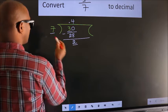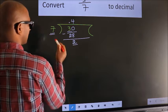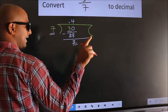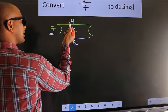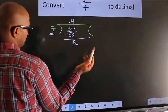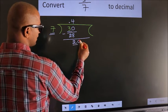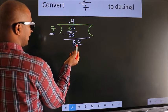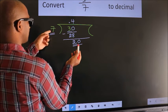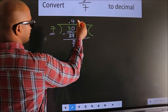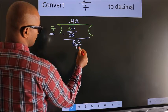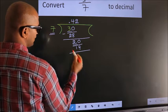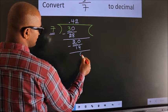Here we have 2, here 7. 2 is smaller than 7. And we already have the decimal, so we can directly take 0 — so 20. A number close to 20 in the 7 table is 7 twos 14. Now we subtract. We get 6.